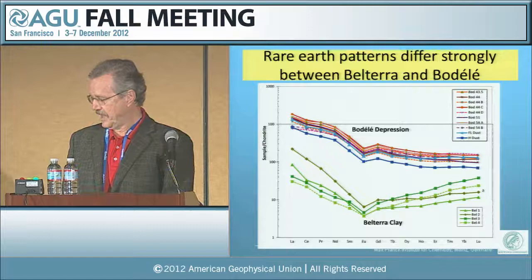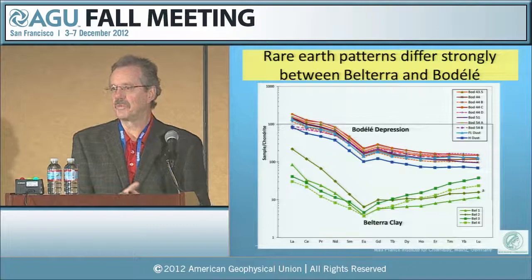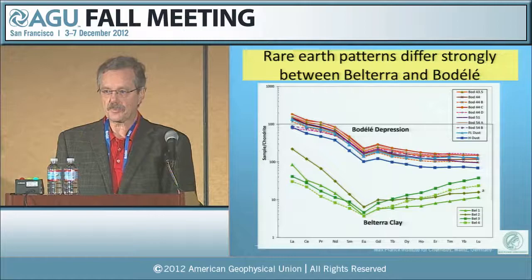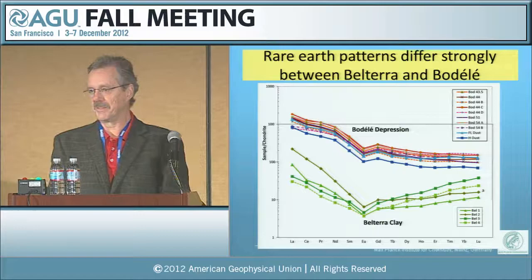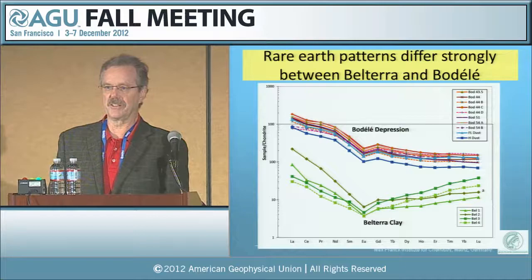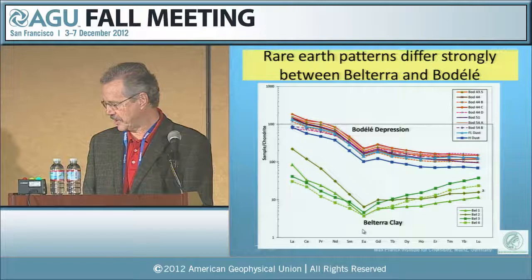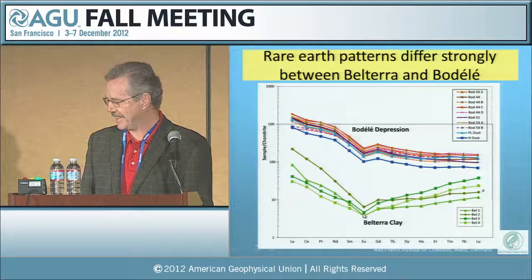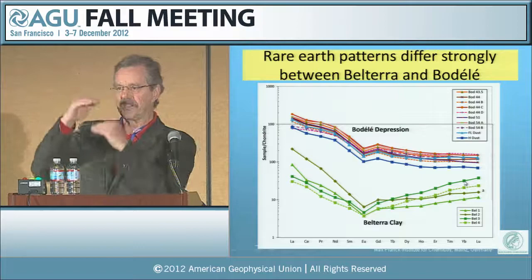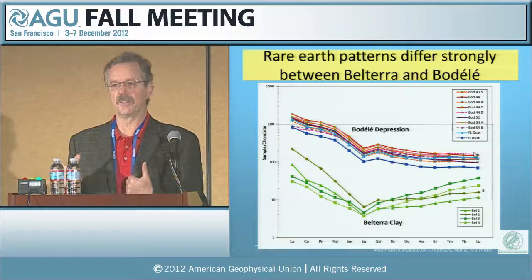The first system we choose is rare earth compositions. Rare earth elements tend to be mobilized much less during weathering and tend to reflect the rocks from which they originate. When we compare rare earth patterns from the Baudelaire Depression and from the Belterra, we see they're altogether different. Plotted normalized to chondritic composition, the pattern is different: there is a europium depletion much deeper in the Belterra clay, and the Belterra clay has a positive heavy rare earth anomaly, whereas the Baudelaire has just the opposite — a negative rare earth anomaly. So another clue that this material seems quite different.